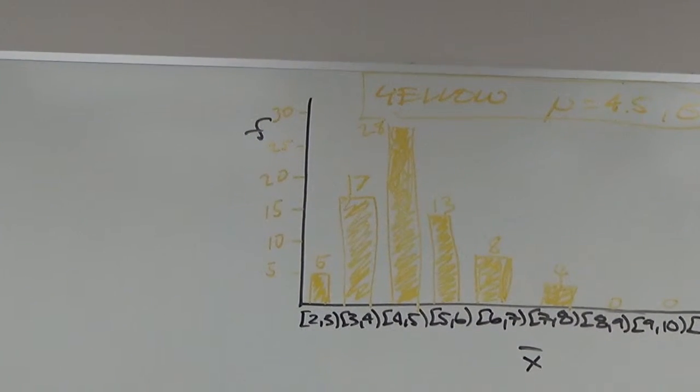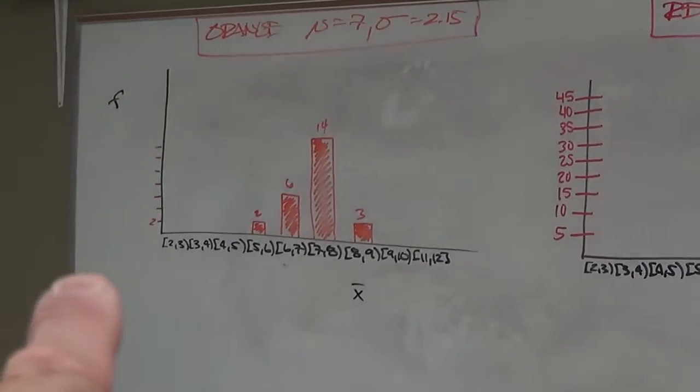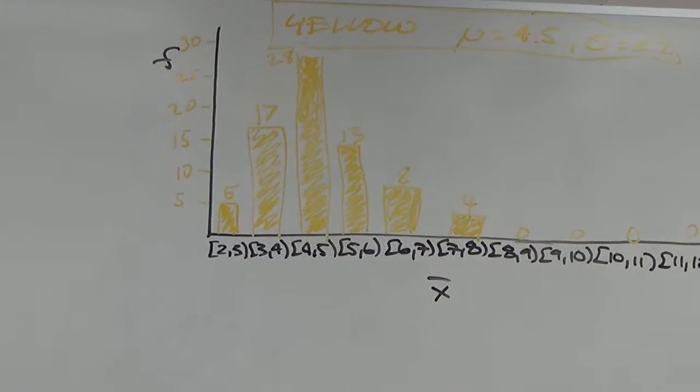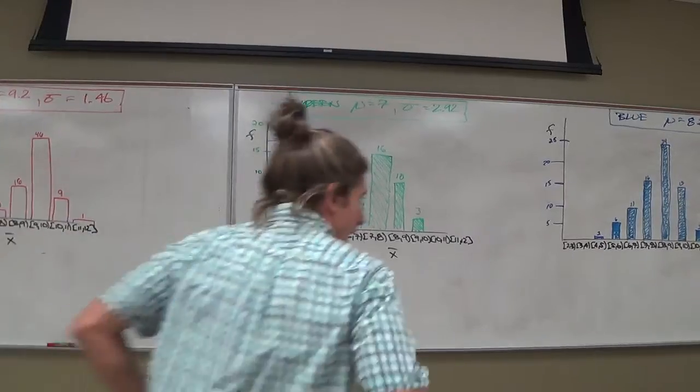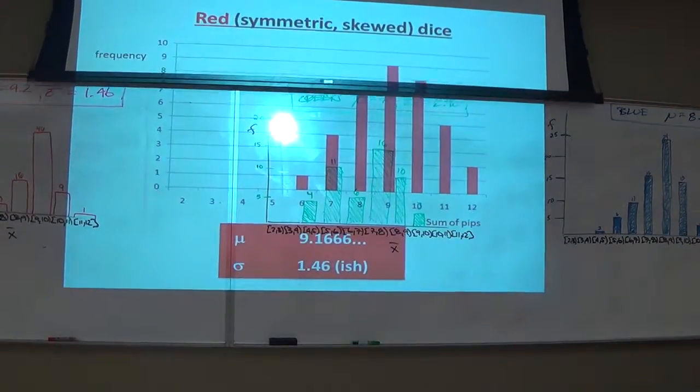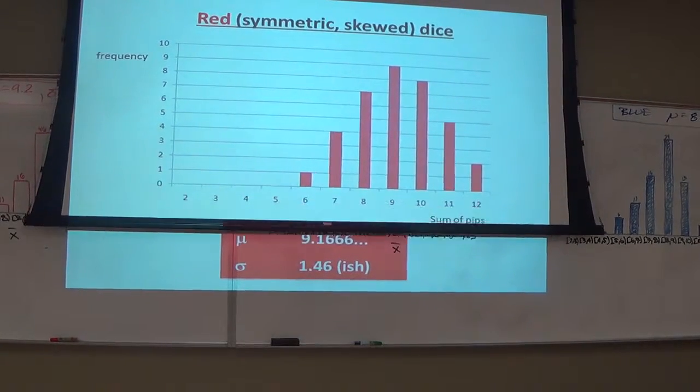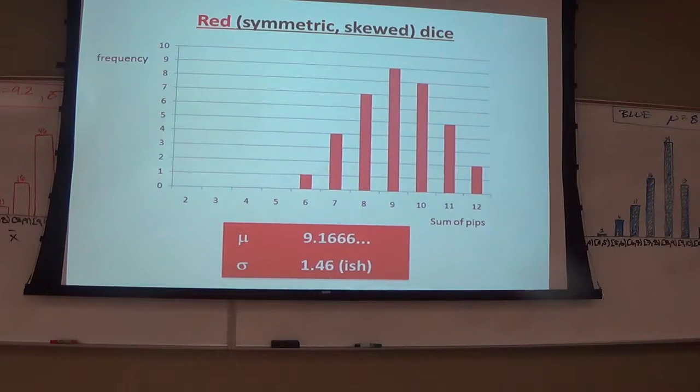It's the average of the distribution. So the highest bar on orange was the one that contained the average. The highest bar on red contained the average. The highest bar on green, blue, and yellow. Did that happen with the population graphs? Let's remind ourselves. There's the red one. Did it happen with the red one? The average was 9.2. It did. But that was already bell shaped.